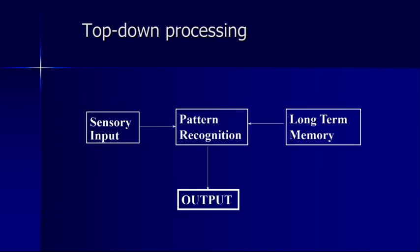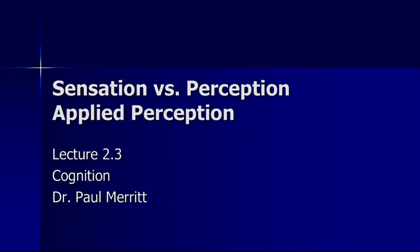So the basic idea is: we have sensory input coming in to pattern recognition from the bottom up, and we also have information from long-term memory coming down from the top. Between these two processes — bottom-up sensory input and top-down information from long-term memory — we get an output of what it is that we see or experience. We'll pick up with applied perception in our next lecture.